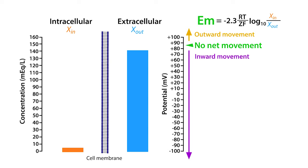Let me show you how the equilibrium potential changes as intracellular and extracellular ion concentrations are increased or decreased. Starting with an intracellular concentration of 5 milliequivalents and an extracellular concentration of 140 milliequivalents, we get an equilibrium potential of plus 86 millivolts.